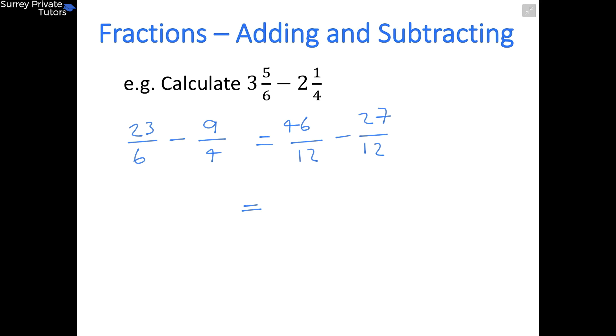So now, as before, you keep the bottom the same, and you just have to subtract your numerators. So 46 take away 27 is going to be 19, so you get 19/12. And you can't simplify this any further, you can't divide 19 or 12 by any further numbers, so 19/12 is your final answer.